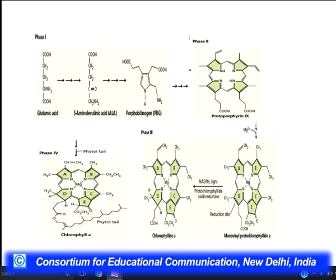The biochemical pathway: glutamic acid forms protoporphyrin, which acquires magnesium ions to complete the skeleton, giving rise to protochlorophyllide. Protochlorophyllide requires NADPH₂ as a hydrogen source and light to give rise to chlorophyllide A. This then acquires a phytol tail through esterification in phase 4 to give the fully functional chlorophyll A.